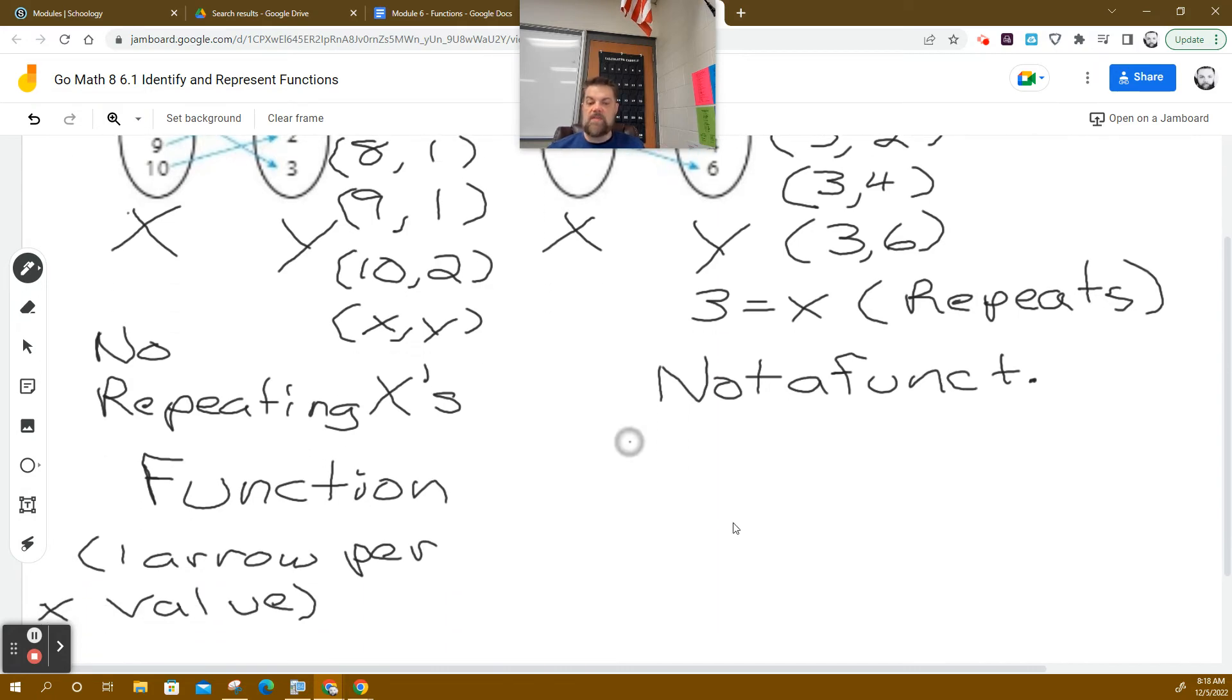So there are more than one arrow leaving the X value. So anytime you have more than one arrow, more than one arrow per X value. Write this down please. I don't see everybody. You guys are mesmerized by my teaching, but I need to see pencils writing on the paper. More than one arrow per X value.